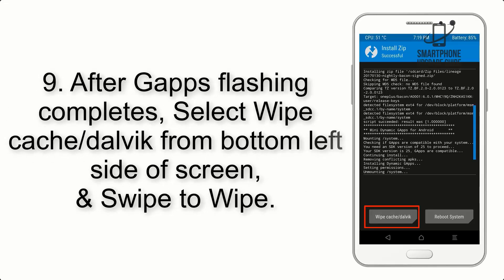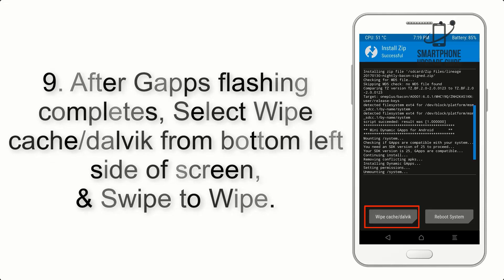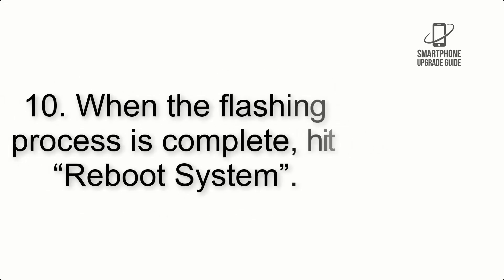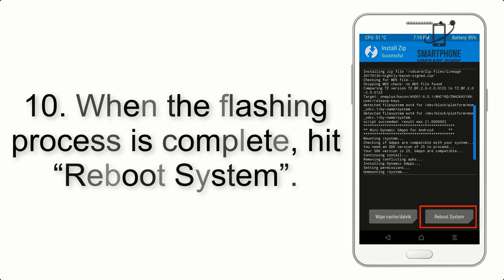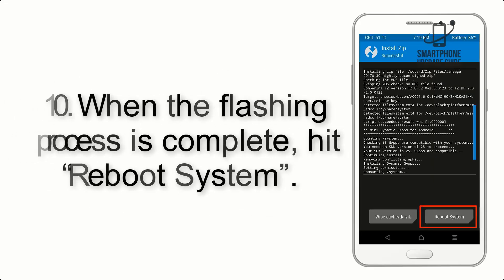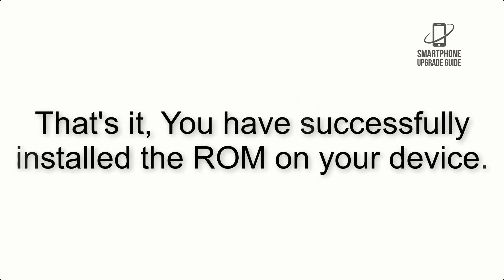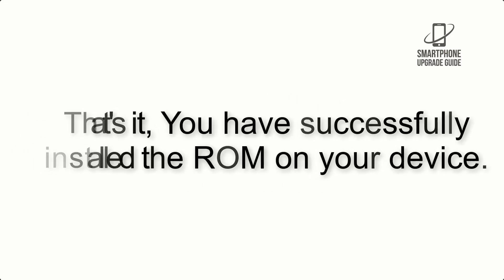Step 8: Flash the GApps zip package in the same manner. Step 9: After GApps flashing completes, select Wipe Cache and Dalvik from the bottom left side of the screen and swipe to wipe. Step 10: When the flashing process is complete, hit Reboot System. That's it — you have successfully installed the ROM on your device.